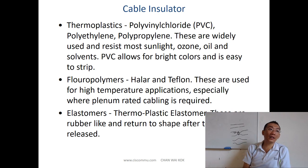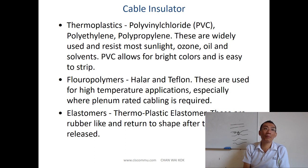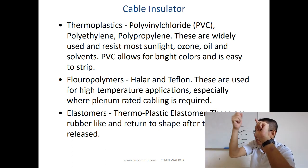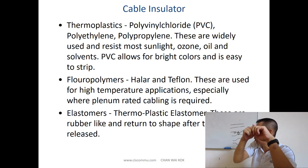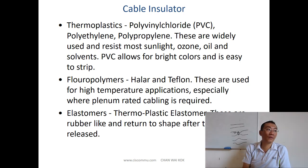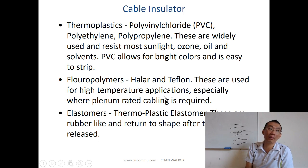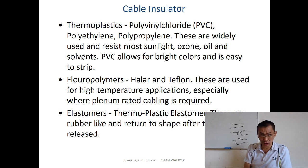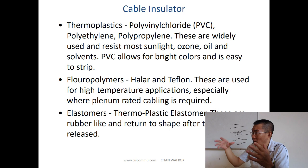The cable insulator types include: thermal plastic, which is widely used and resistant against sunlight, ozone, oil, and solvent; PVC, which allows bright color and is easy to strip — meaning you can easily remove the plastic to expose the copper for connections. There is also fluoropolymer, used for high-temperature applications, and elastomer, which is rubber-like and returns to shape after tension is released — used in underground or harsh environments.